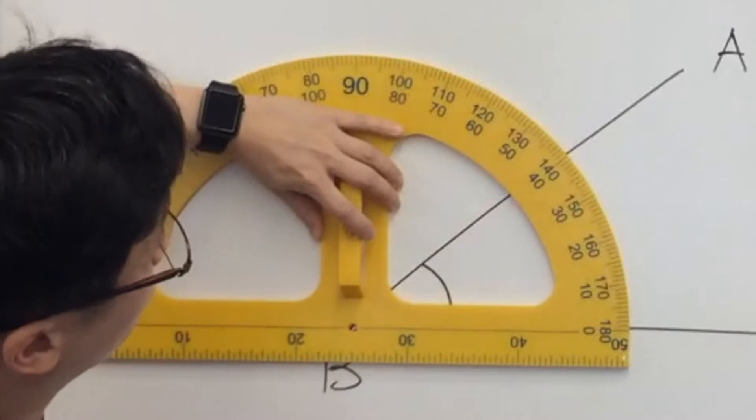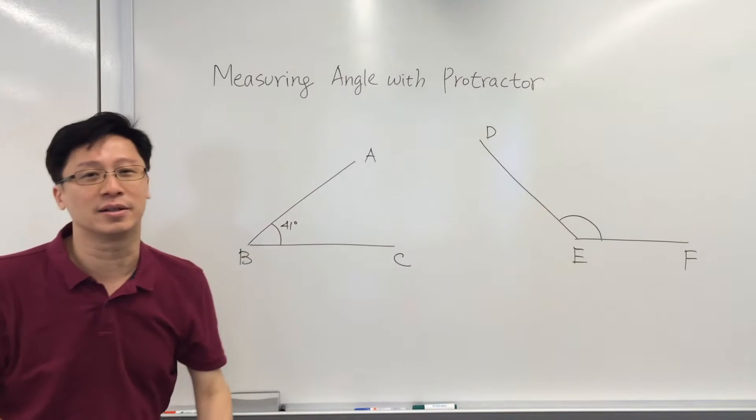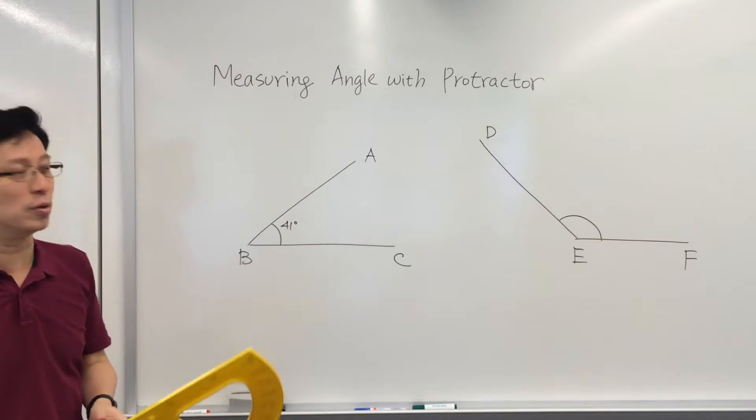This is about 41. So we can actually measure the size of this acute angle, 41 degrees.